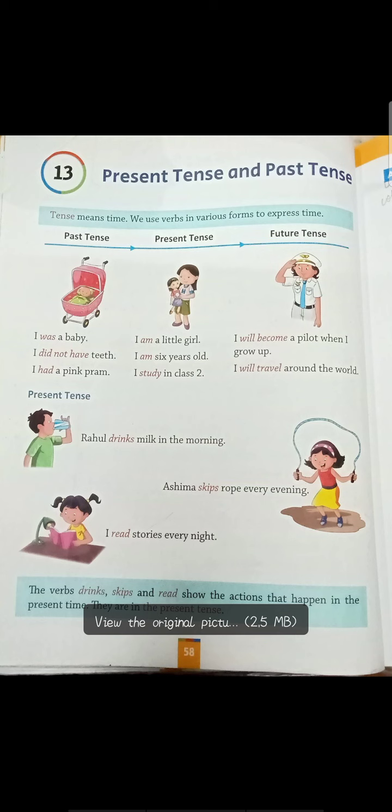Now the blue strip says: tenses means time. We use verbs in various forms to express time. Here we have written various verbs to express time. Now past tense, present tense, and future tense — some sentences are given with the pictures, so let's see that.